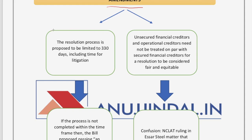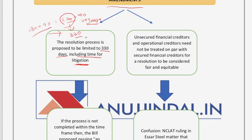The first amendment changes the time frame from 180 plus 90 days (270 days, excluding litigation) to 330 days, which now includes the time for litigation. Although the total has increased from 270 to 330 days, the key difference is that 330 days includes litigation time whereas the earlier 270 days did not. If the process is not completed within 330 days, an order will be passed for liquidation of the company.